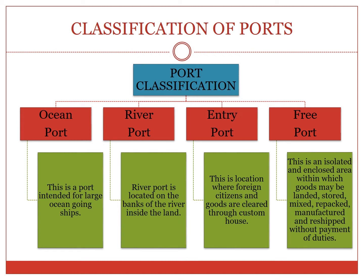Ports can be classified into four types. An ocean port is intended for large ocean-going ships and is situated in oceanic bodies. A river port is located on the banks of a river inside the land and is used for inland navigation. An entry port is a location where foreign citizens and goods are cleared through custom houses. A free port is an isolated and enclosed area within which goods may be landed, stored, mixed, repacked, manufactured and reshipped without the payment of duties.